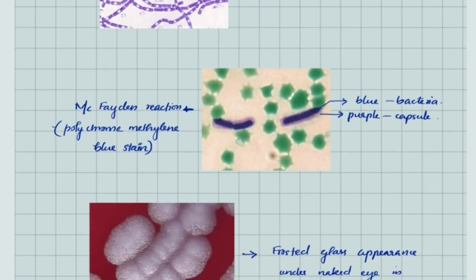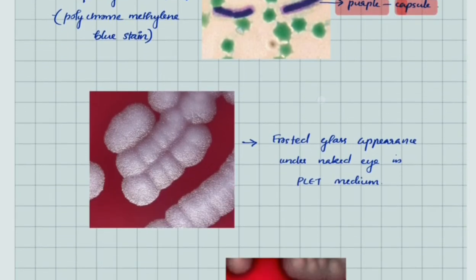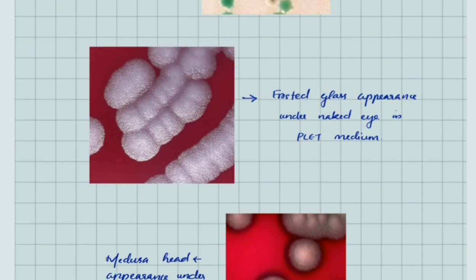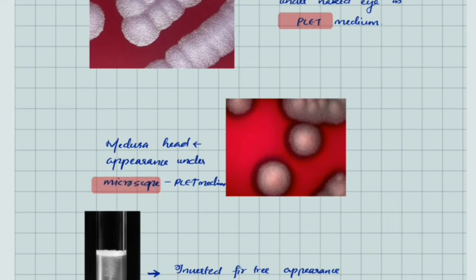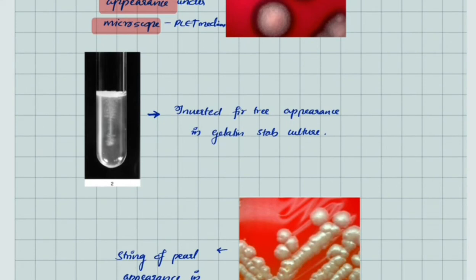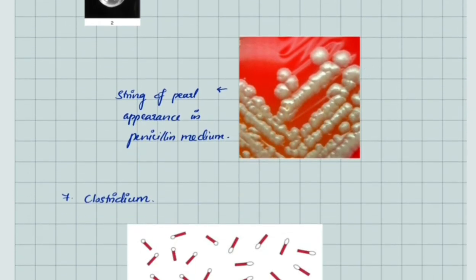The M'Fadyean reaction by polychrome methylene blue stain gives blue stain to the bacteria and purple stain to the capsule. Under naked eye, we see frosted glass appearance of Bacillus anthracis growth in flat medium, and under microscope we see Medusa head appearance. In gelatin stab culture, we see inverted fir tree appearance due to motility.